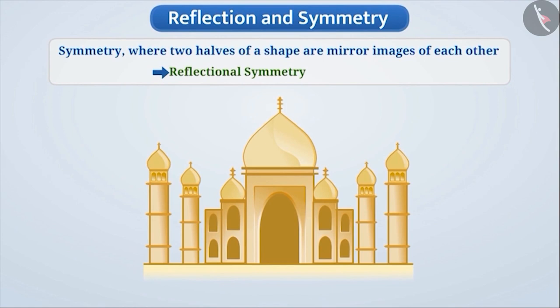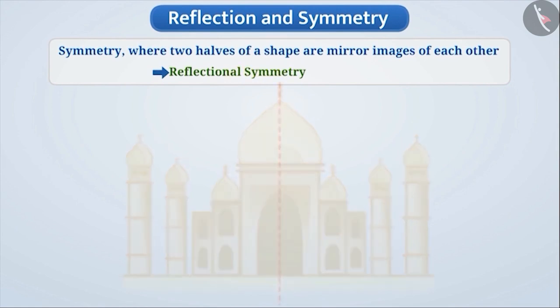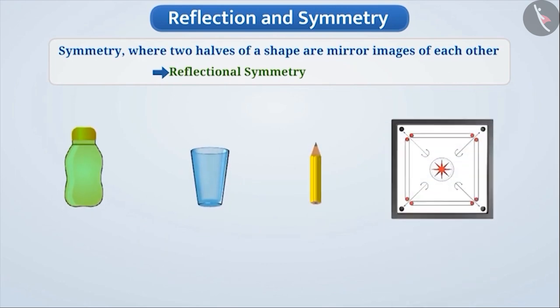The Taj Mahal is a famous example of architecture. In this, we see the use of reflection symmetry. Symmetry is also seen in items or objects used in our daily life. It makes the object look attractive.